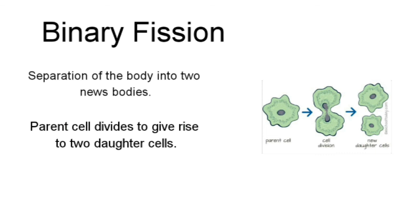Binary fission is also a method of asexual reproduction. Here the parent cell divides to give rise to two daughter cells. The daughter cells then each develop into individual parent cells and give rise to two more daughter cells, and so on.